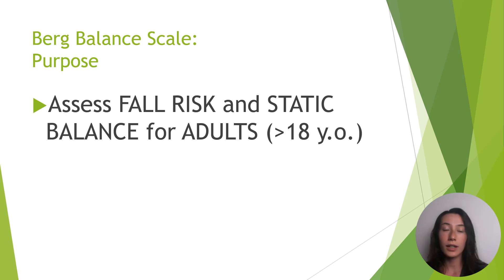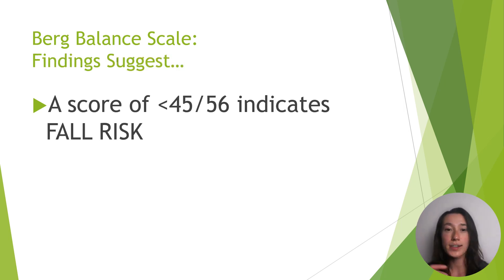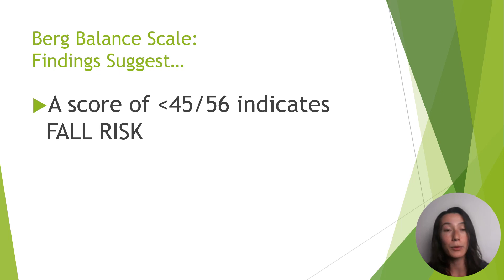Just like with any other functional outcome measure, you have to use them for a purpose. So for the Berg, the purpose could be to either prove or disprove that someone is a fall risk, or to assess how a person's static and dynamic balance are. Once the test is complete and you've added up all the scores, understand that you can actually separate the scores into mobility levels. For example, a person might be safest with a lower score moving with a wheelchair, or they should be walking with an assistive device, or they can walk independently.